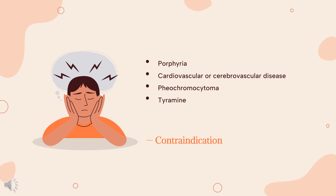Concomitant use of serotonin-enhancing drugs, including SSRIs, serotonergic TCAs, dextromethorphan, and meperidine, may cause serotonin syndrome. Concomitant use of sympathomimetic agents, including amphetamine and pseudoephedrine, may cause toxicity by serotonin syndrome or hypertensive crisis. L-DOPA given without carbidopa may cause hypertensive crisis.